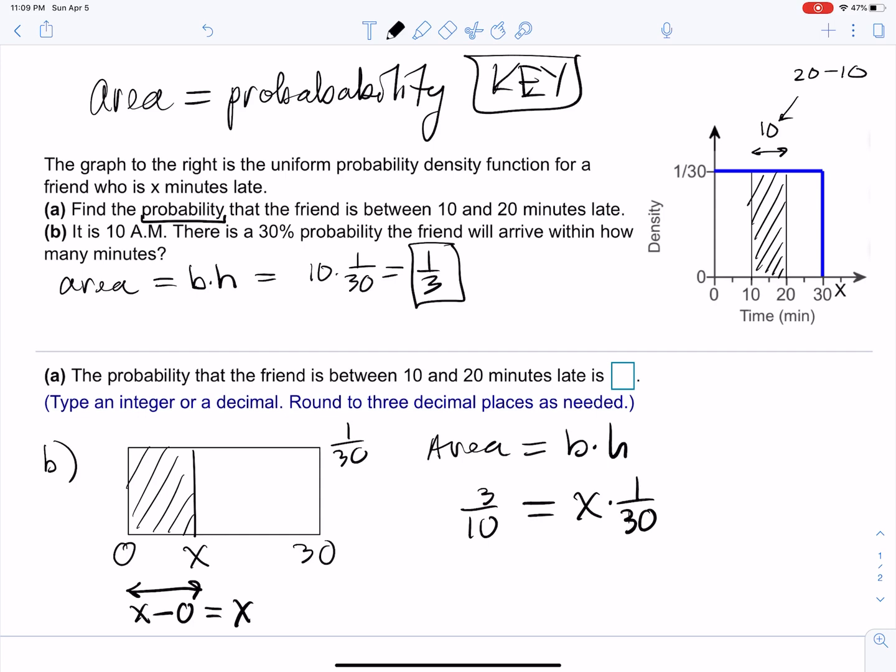That's it. All we got to do is solve for x in this case. We can multiply both sides by 30, so you get 9 equals x. So that's it—nine minutes.